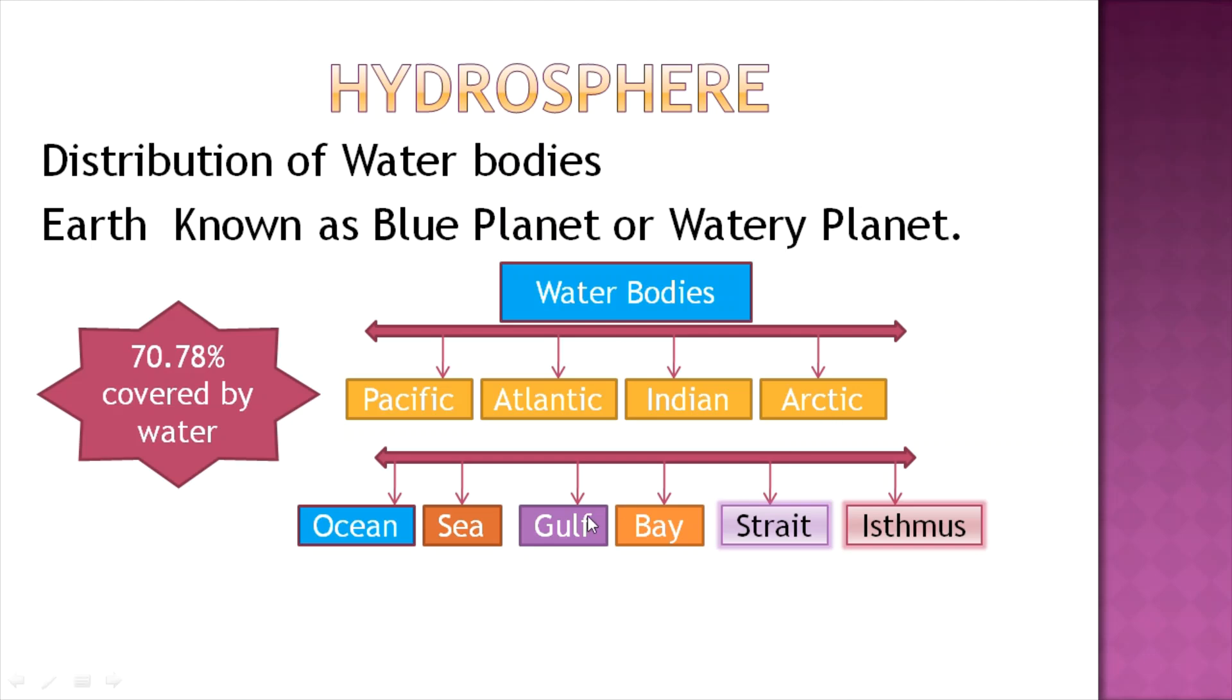A gulf is a part of an ocean or sea that penetrates into the land. A bay is a small semicircular water body surrounded by land.